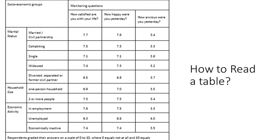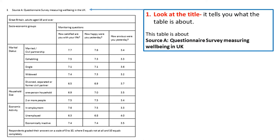Let us look at how to read a table. I will take an example of a table and illustrate the technique of reading tables. First thing first — the first thing you should look at is the title. It tells you what the table is about. This table on the screen is about a questionnaire survey measuring well-being in the UK. In other words, it's the result of a questionnaire where they conducted a survey to find out how people feel about themselves in the UK.